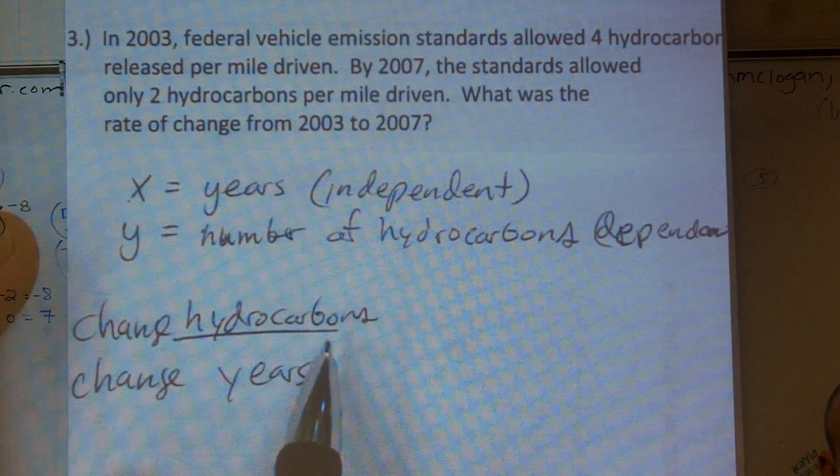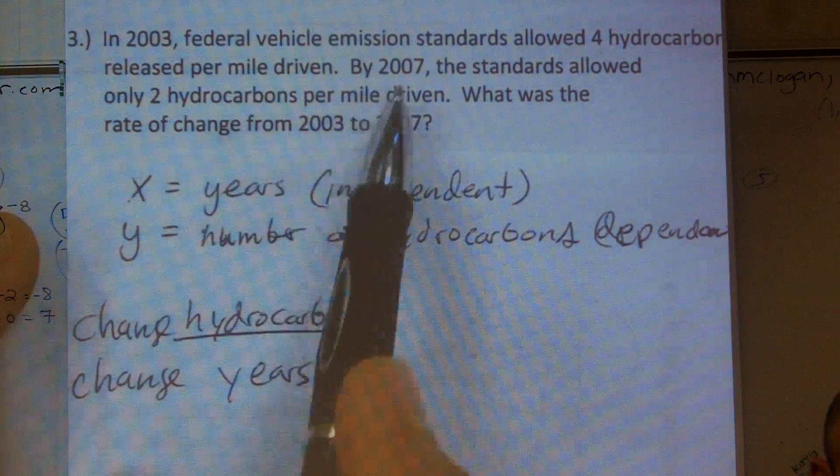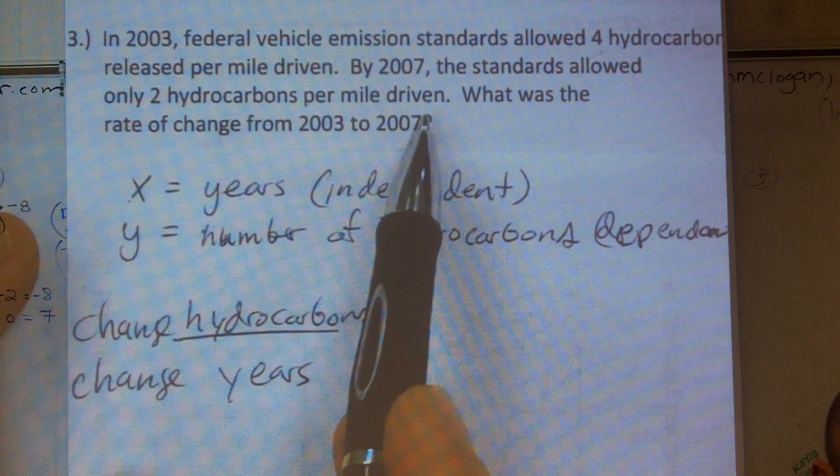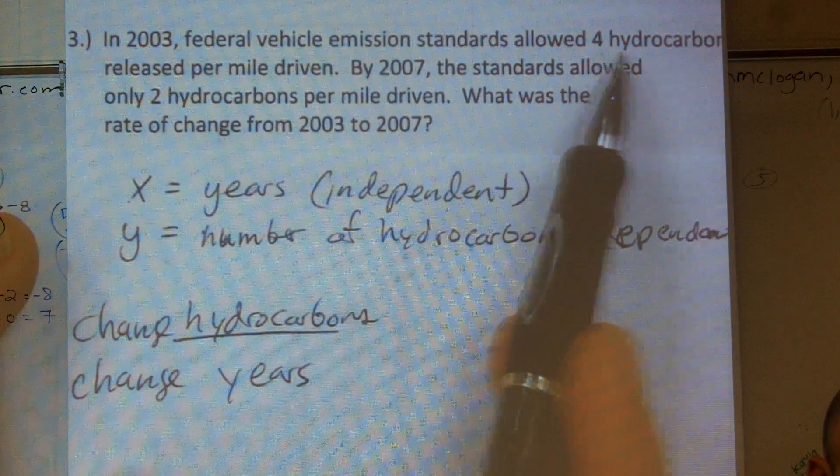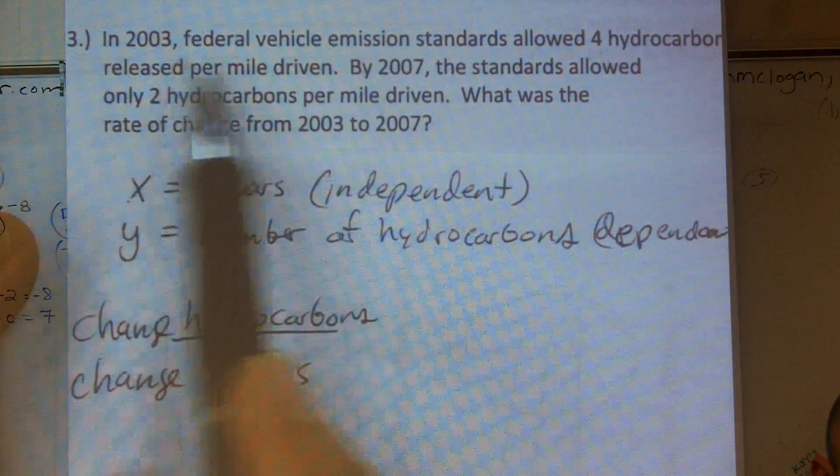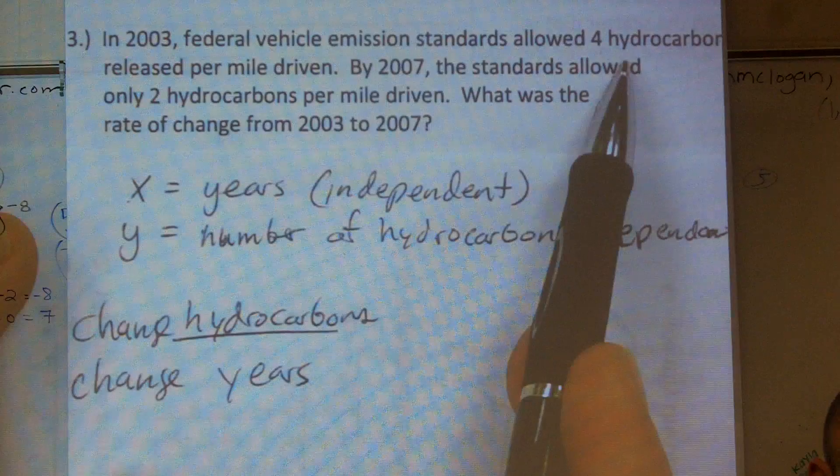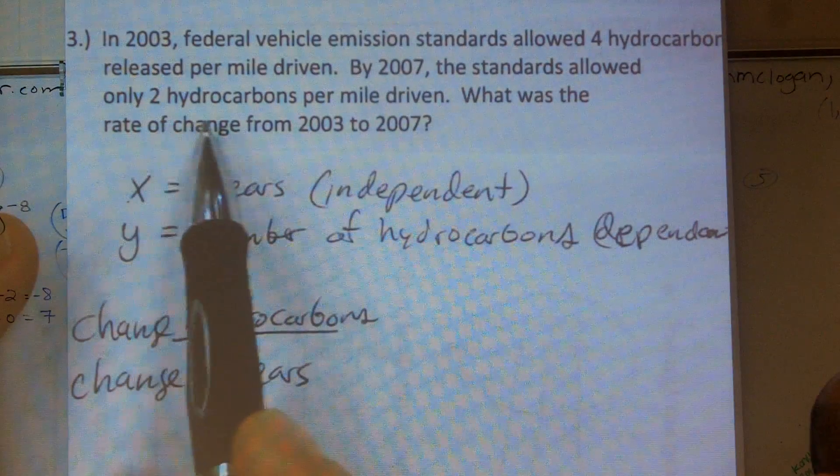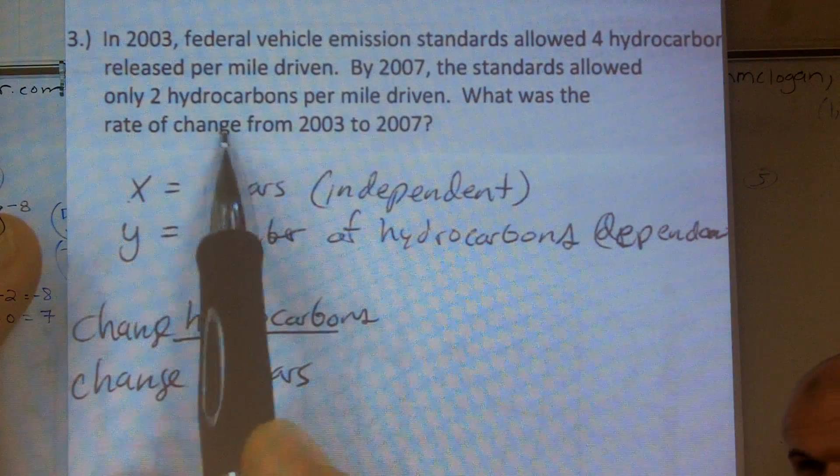So what was the change in the hydrocarbons? From 2003 to 2007, how many did we change? In 2003, Federal Emission Standards allowed four. Then by 2007, they only allowed two. So did we go up or did we go down? We went down.